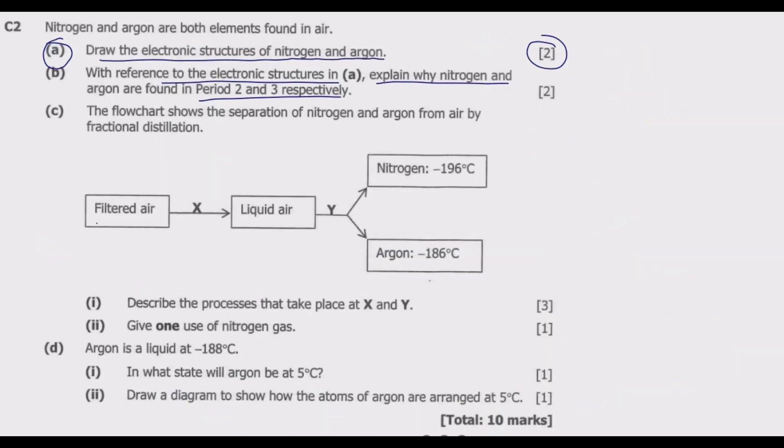Question C: the flowchart shows the separation of nitrogen and argon from air by fractional distillation. We have filtered air, then X, liquid air, then Y. We have nitrogen at negative 196 degrees Celsius, then argon at negative 186 degrees Celsius. Describe the processes that take place at X and Y. At X, what is happening is we are heating the filtered air with varying temperature. Then at Y, we are condensing the liquid air with varying condensation point. We are reducing the temperature so that we collect them at different condensation temperatures.